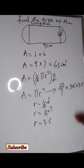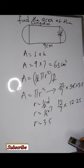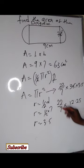3.5 times 3.5 gives us 12.25. So I will have 22 over 7 times 12.25. Then we press our calculator. This is 22.